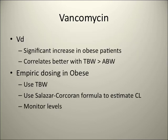For vancomycin, which we use a lot, the volume of distribution is significantly increased in obese patients, meaning we need to increase the dose. Studies found that volume of distribution correlates better with total body weight than adjusted body weight, so we use total body weight for dosing — whatever the patient weighs. We also use the Salazar-Corcoran formula to estimate clearance and we monitor the level.